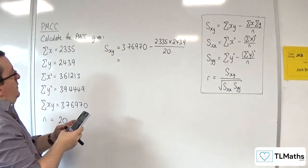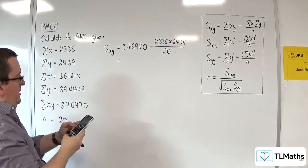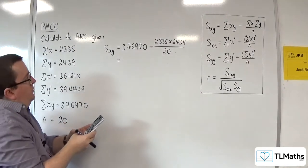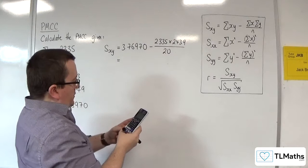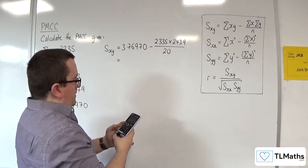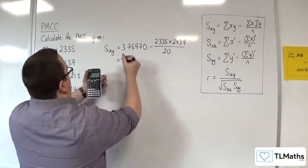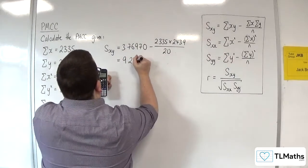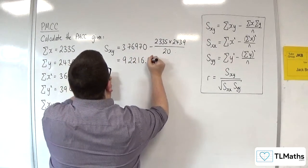So, 376970 take away 2335 times 2439 over 20. Okay, so we get 92216.75.